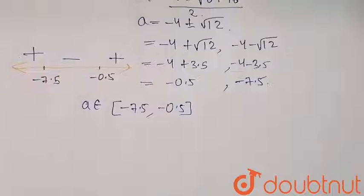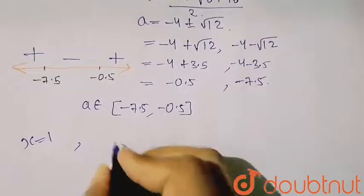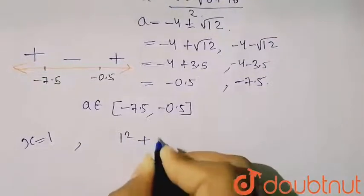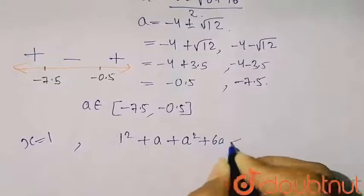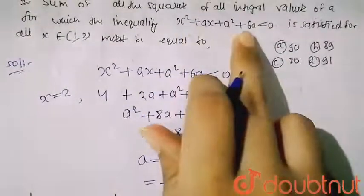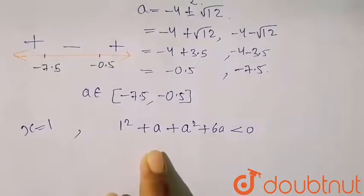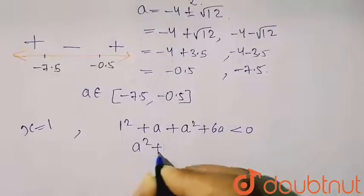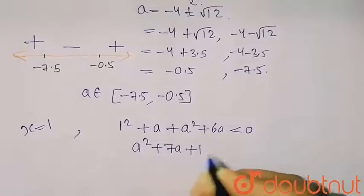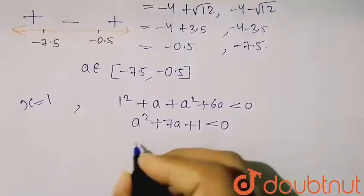Another condition is that we have to check at x = 1 also. So when we put x = 1: 1² + a + a² + 6a < 0. In this equation I have put x = 1, so I got: 1 + a + a² + 6a < 0, which can be written as a² + 7a + 1 < 0. Now similarly, the quadratic formula is applied to find the value of a.